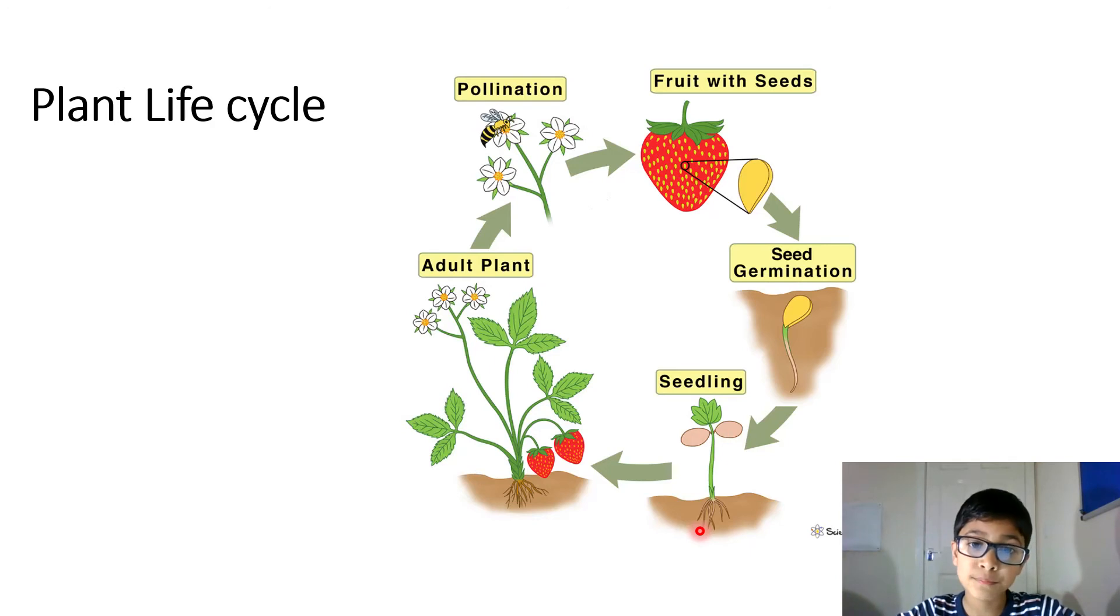Then it turns into an adult plant. So, it grows bigger. And then it gets pollinated by bees or wasps. And then you get the fruit. And then it keeps on happening.